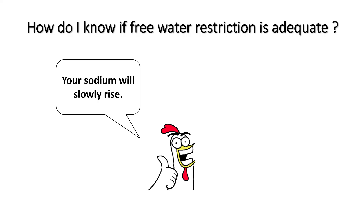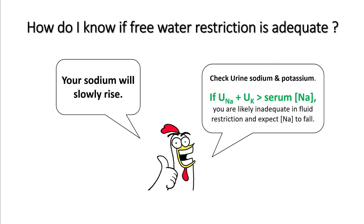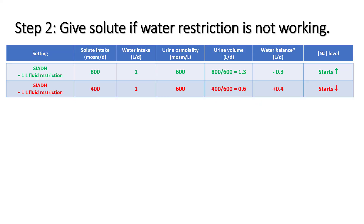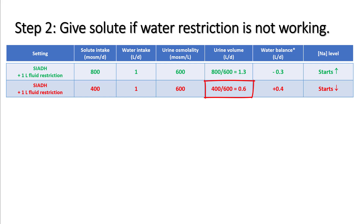To confirm fluid restriction is working, sodium should slowly rise. You can check urine sodium and urine potassium — if their sum exceeds serum sodium, water restriction is likely inadequate. If the patient starts eating less food, say 400 mOsm per day, urine output drops to only 0.6 liters (400 ÷ 600), creating a positive water balance even on the same restriction. In this case, you need to add solute to the patient.